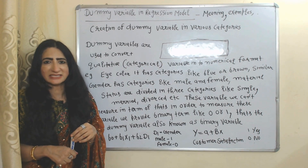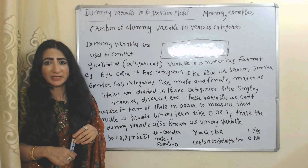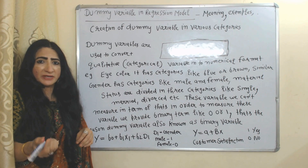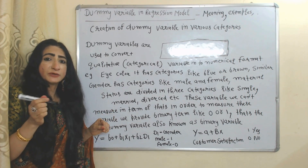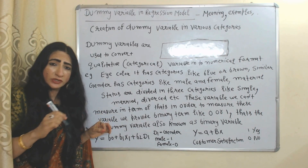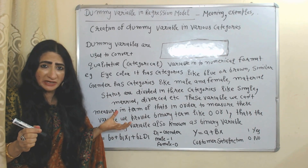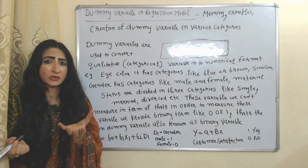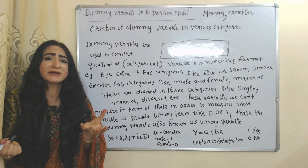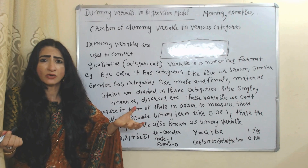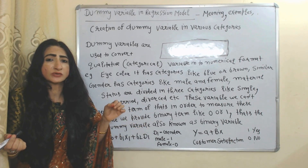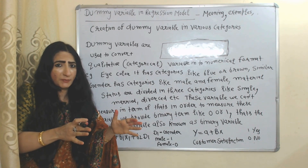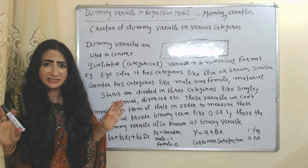We use the dummy variable in order to convert a qualitative variable into numerical format. To measure a qualitative variable, we provide a binary term like zero or one. That's why a dummy variable is also known as a binary variable. We can use dummy variables for both dependent as well as independent variables.